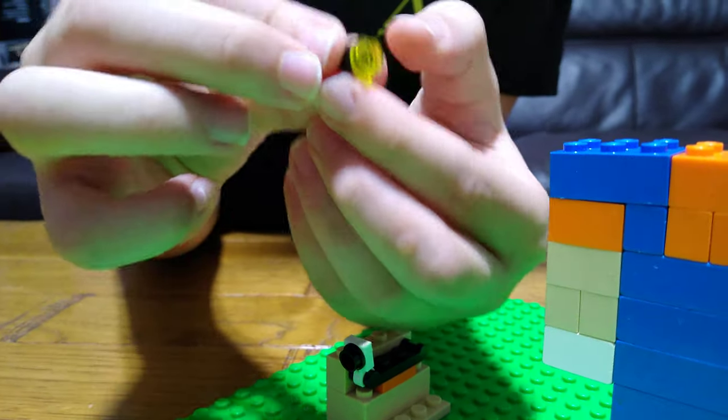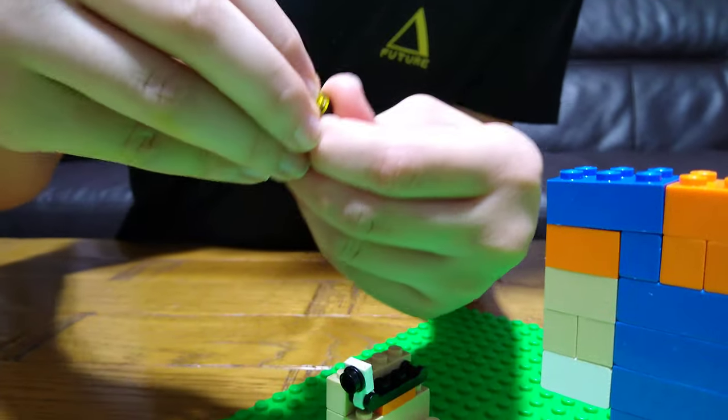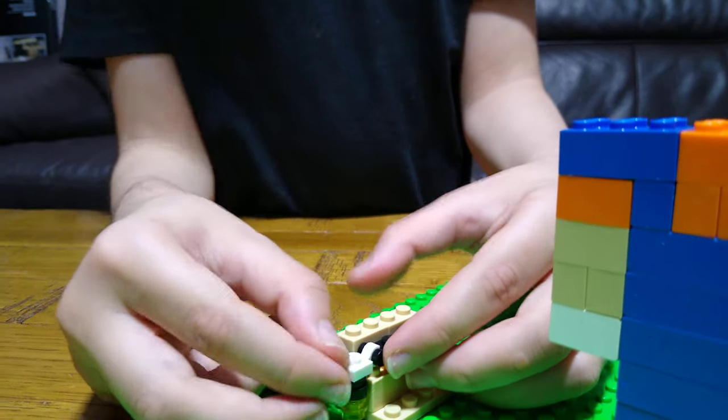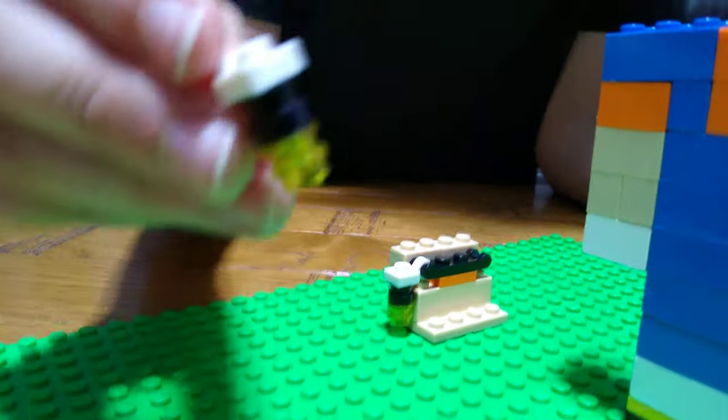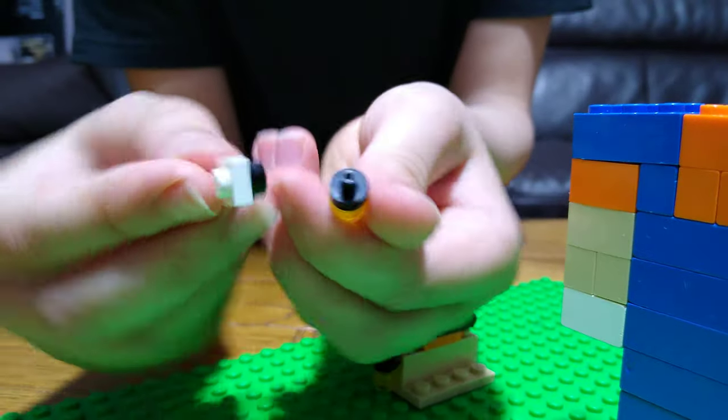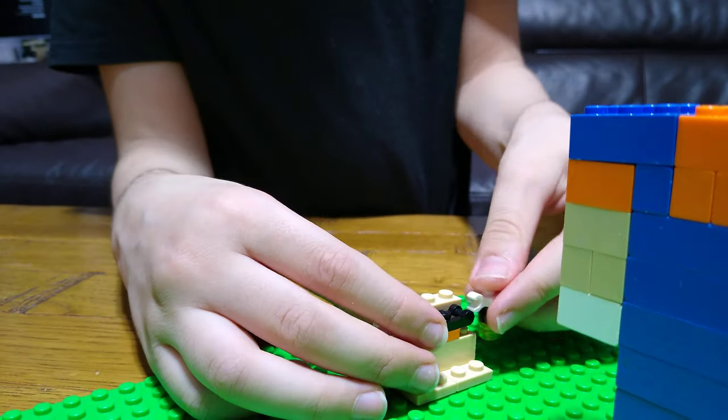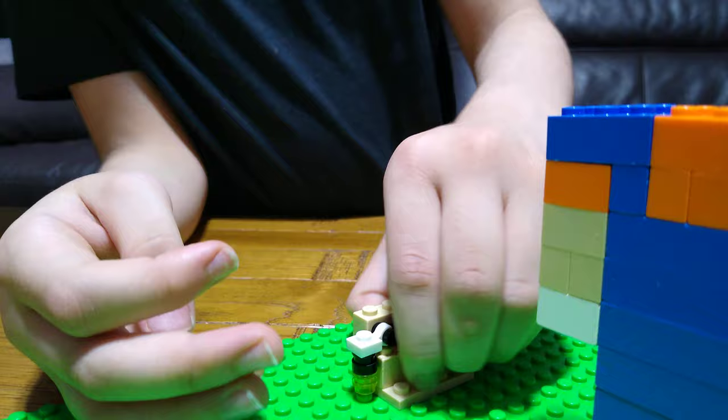And put one of these on another one for like the earring. I'm not sure what that is, like the fusing earring. And then get another one like this, just put it on the other side. Now just take it off.